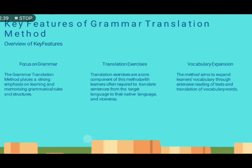What are the key features? The first is it focuses on grammar. The grammar translation method places a strong emphasis on learning and memorizing grammatical rules and structures. We need to know which form of verb to use and the structure of English sentences.